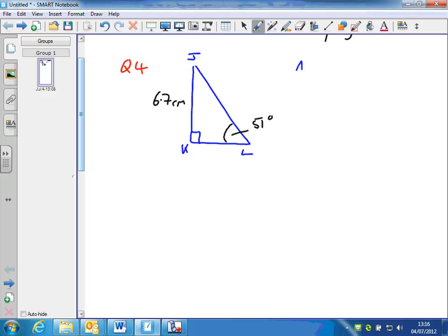Angle J equals 180 degrees minus 90 plus 51, which equals 180 minus 141, which is 39 degrees. So angle J is 39 degrees. That's the first part.